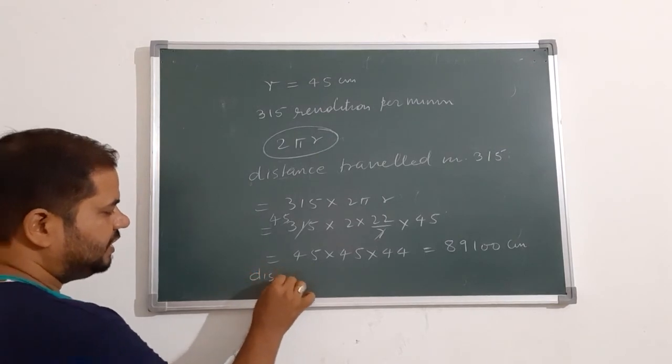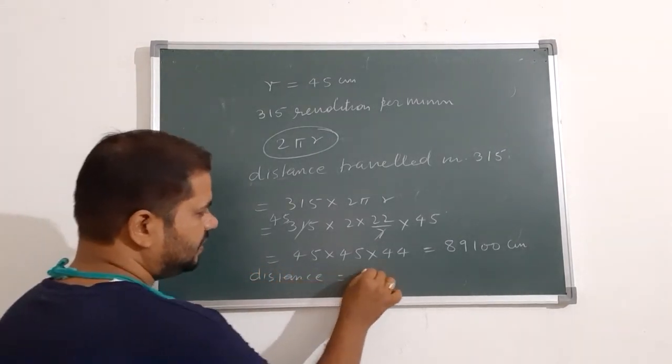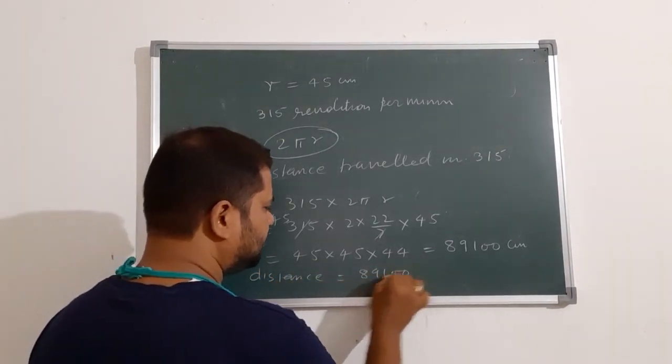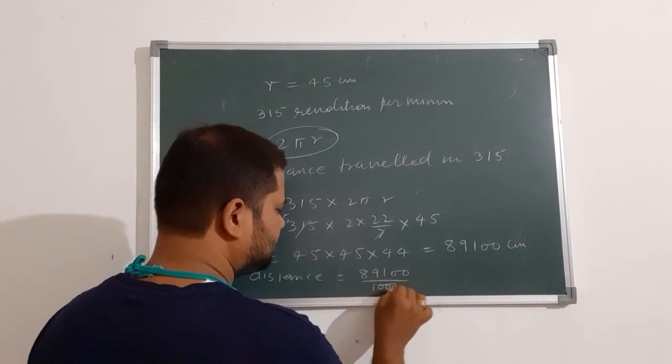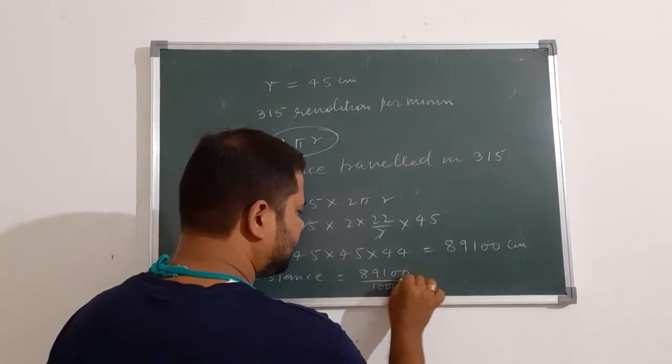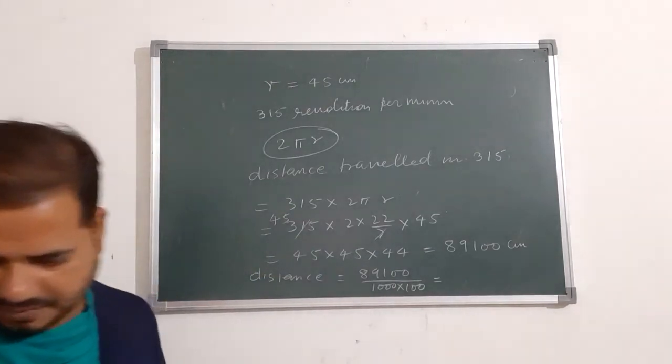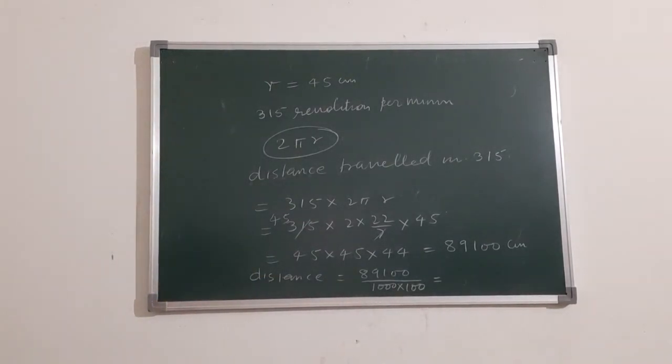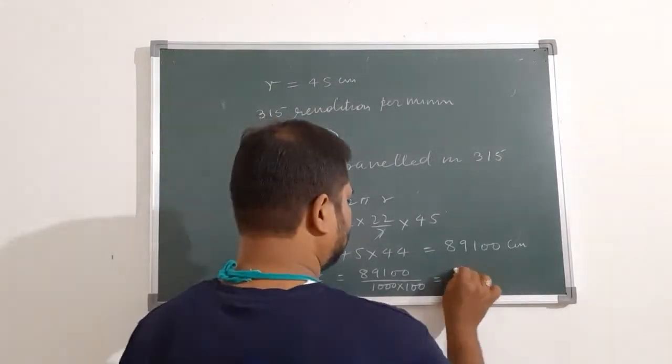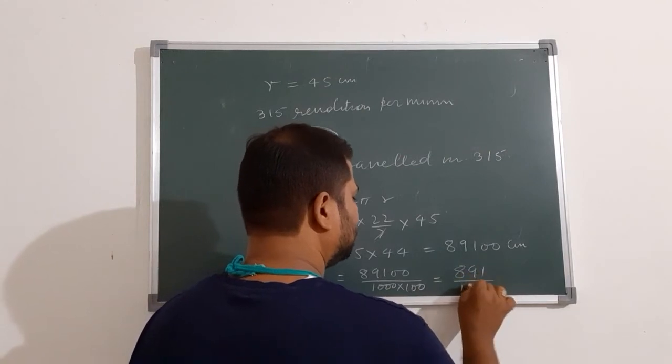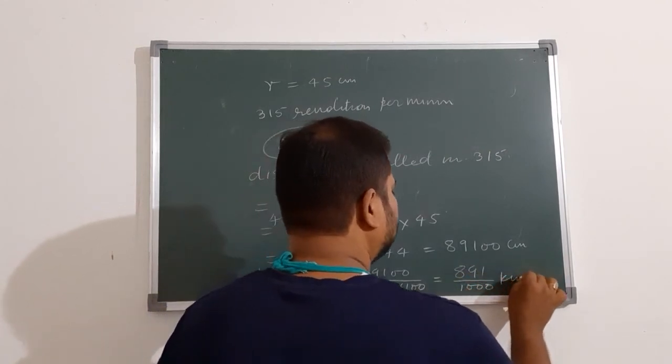So distance in kilometer is 89100 divided by 1000 meters into 100 centimeters. So this is nothing but 891 upon 1000 kilometers, 891 upon 1000 kilometers.